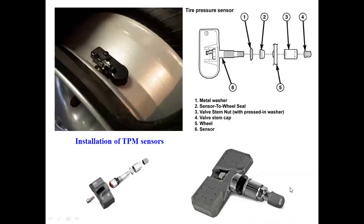The exploded view of the tire pressure sensor shows the sensor SME, metal washer, sensor-to-wheel seal, wheel mounting point, wall stem nut with press-in washer, and wall stem cap. On the wheel disc, the typical TPM sensor — tire pressure monitoring sensor — is mounted, and this is what the tire pressure sensor physically looks like.